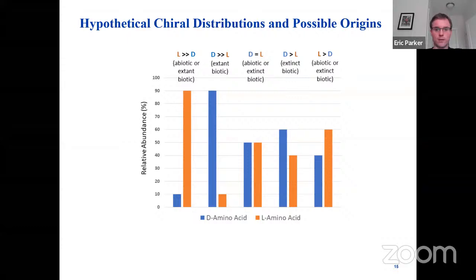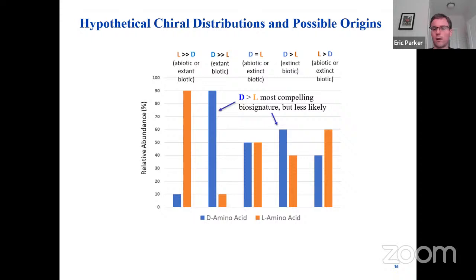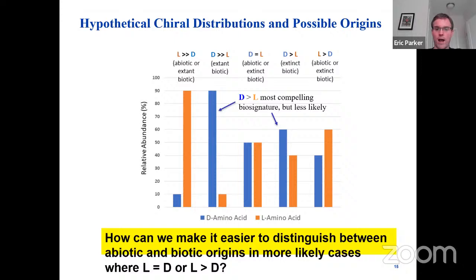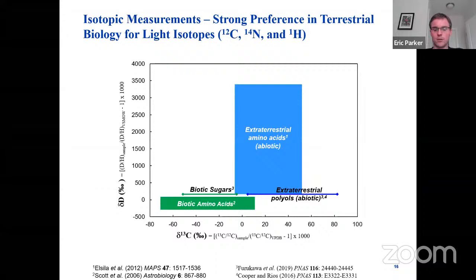It's helpful to evaluate scenarios based on differences between D and L enantiomers. If L is greatly in excess of D, this could be terrestrial contamination or extant biology. If D is significantly greater than L, this could also be extant biology. Racemic mixtures suggest abiotic origin or extinct biology, and D slightly greater than L could be extinct biology. L slightly greater than D could be abiotic synthesis — the small L enantiomeric excesses seen in certain meteorites — or extinct biology. The most interesting potential biosignatures would be cases where D is slightly or significantly greater than L, but these have not been reported yet in the meteorite literature. Isotopic measurements — looking at carbon, nitrogen, and hydrogen isotopes of amino acids and also sugars — can help assess whether these are terrestrial or extraterrestrial.